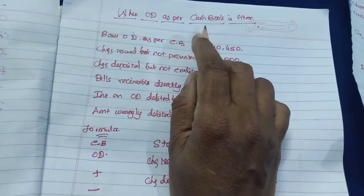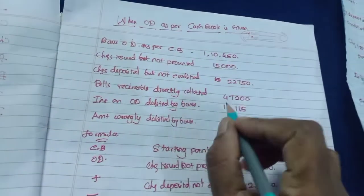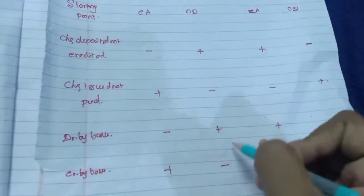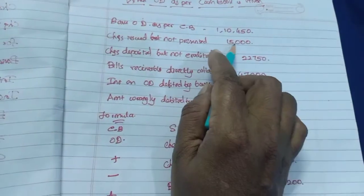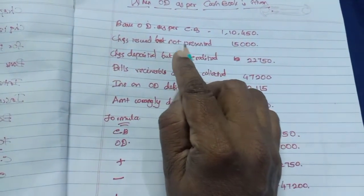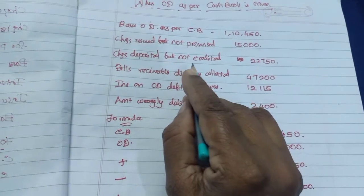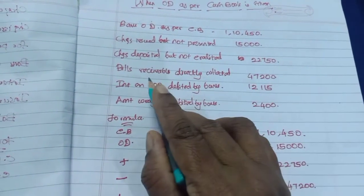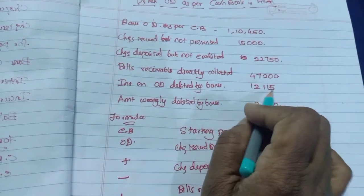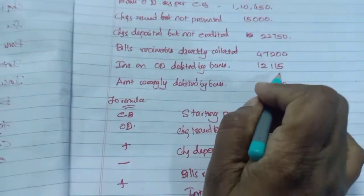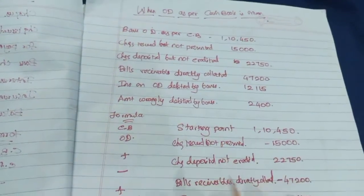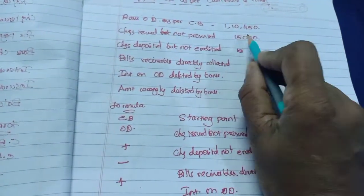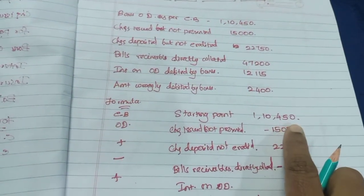The third problem is when OD as per cashbook is given. Since cashbook OD balance is the starting point, we use the formula: plus, minus, plus, minus, to find the passbook OD balance. Bank OD as per cashbook is Rs. 1,10,450. Check issued but not presented — Rs. 15,000. Check deposited but not credited — Rs. 22,750. Bills receivable directly collected — Rs. 47,200. Interest on OD debited by bank — Rs. 12,115. Amount wrongly debited by the bank — Rs. 2,400. Starting point is Rs. 1,10,450.